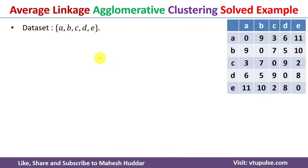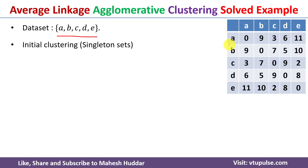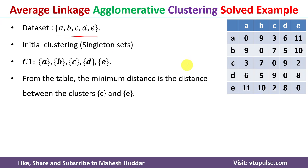We start with the given dataset containing five data points, each considered as singleton clusters: C1 = {A}, {B}, {C}, {D}, {E} — five separate clusters. We need to identify the two clusters with the minimum distance. Looking at the distance matrix, the minimum distance is 2, between C and E. So we combine C and E into one cluster, removing the corresponding row and column and merging E into C.